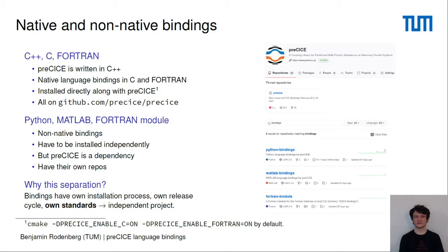All of the necessary code for these bindings is already provided within the GitHub repository Precise/Precise. However, if you want to couple a code with Python, Matlab, or Fortran, then you have to go for the non-native language bindings. Here we have a repository for each language — you have to install them independently and Precise is a dependency of these bindings.